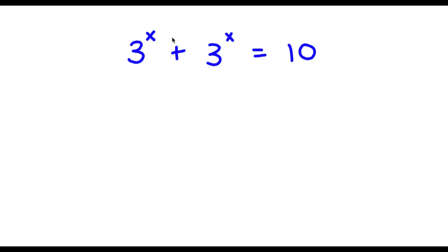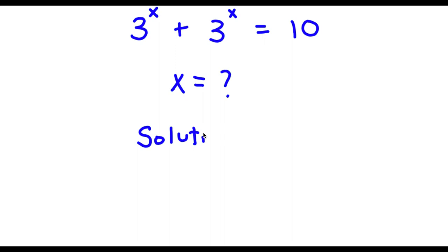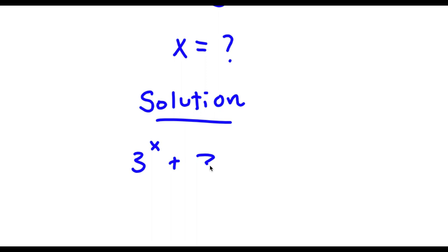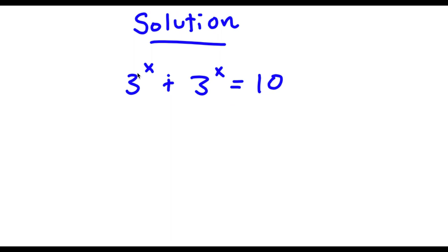Alright, so I have 3 to the power of x plus 3 to the power of x is equal to 10. So I'm going to find the value of x here. For my solution, I start with 3 to the power of x plus 3 to the power of x is equal to 10. Now because I have two 3 to the power of x's on my left hand side, I'm simply going to factor out 3 to the power of x.